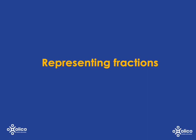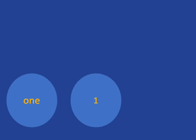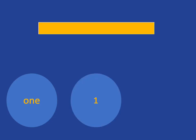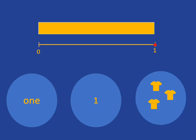We're going to look at representing fractions, but we're going to start by representing a number we're very familiar with — the number 1, which we can write in words or as a symbol. We can represent 1 as one whole chocolate bar, or we can show it as a position on the number line. The other way we're going to consider one whole is as a collection of objects — one whole collection.